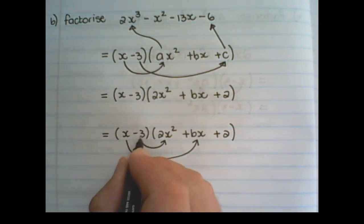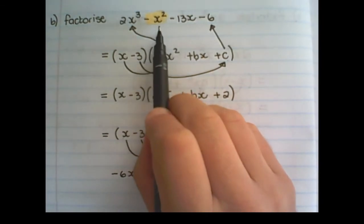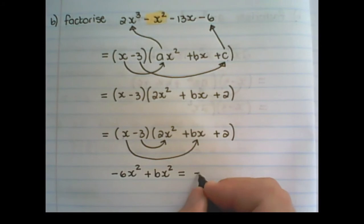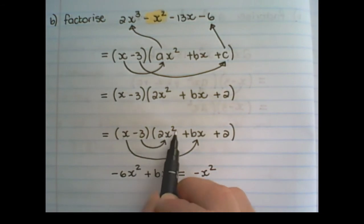So negative 3 times 2x squared is negative 6x squared. x times bx is plus bx squared. And this must be equal to the x squared in the expression.